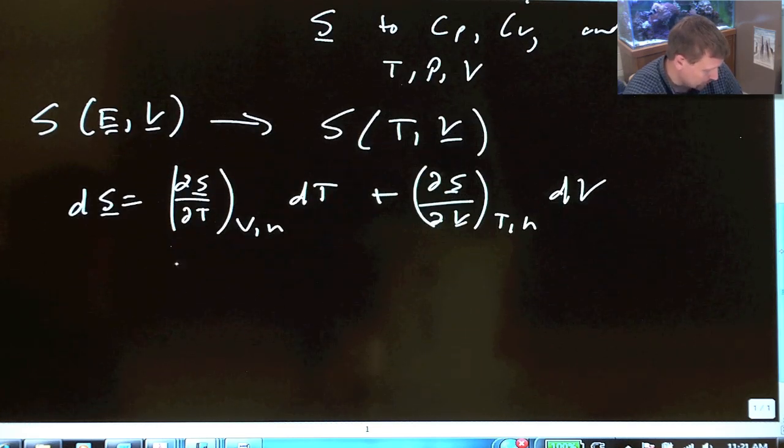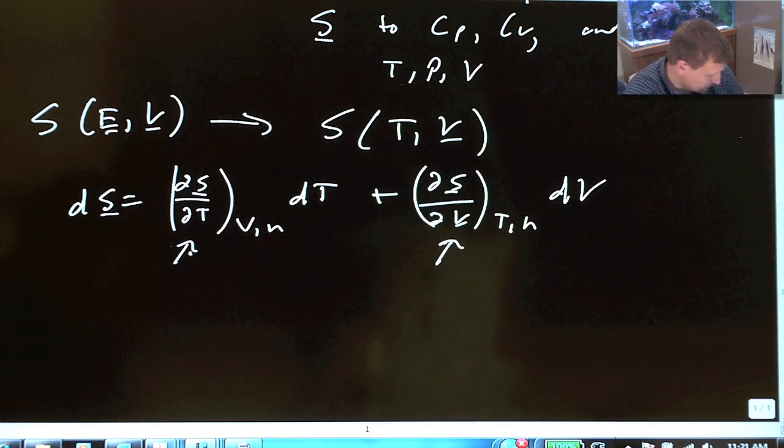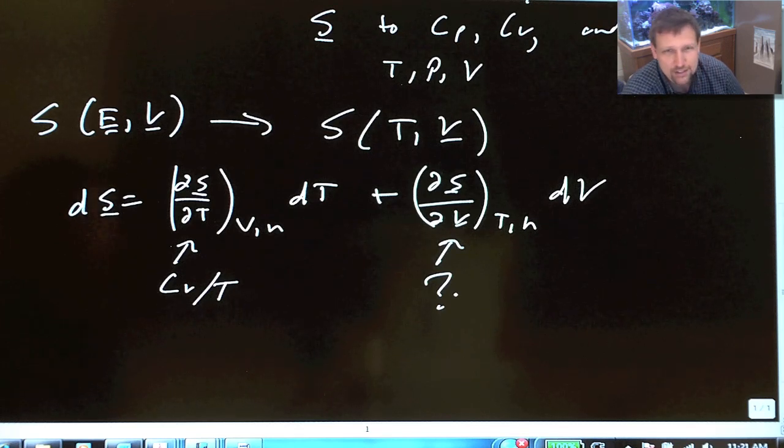So, if we know what these quantities are, we're a long ways towards solving this problem. Luckily, this is simply Cv by T. This is the question mark. What is del S del V at constant T?